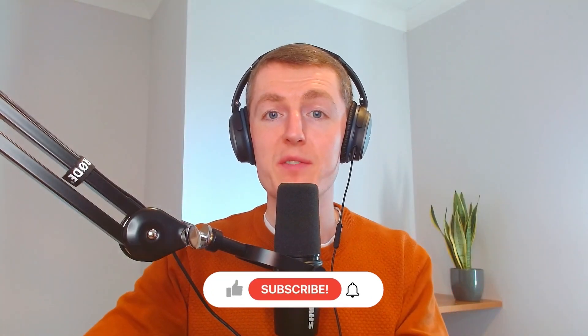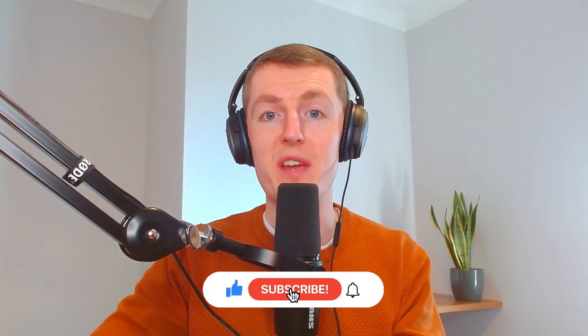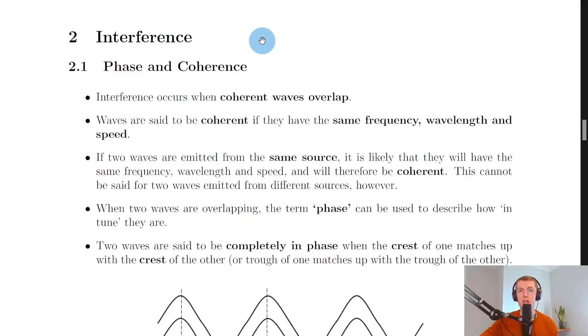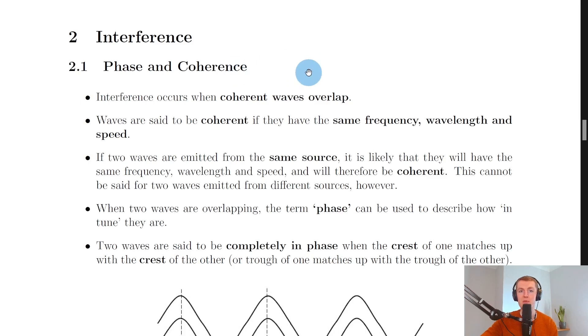Hey guys, Mr. Mitchell here. In this video we're going to look at phase and coherence. We're going to kick off the subtopic on interference by looking at phase and coherence, something you would have seen in higher physics. It starts by saying that interference occurs when coherent waves overlap.